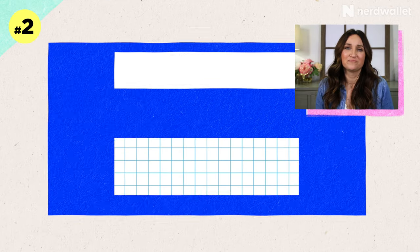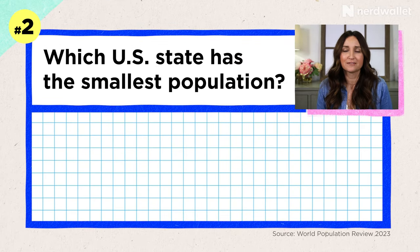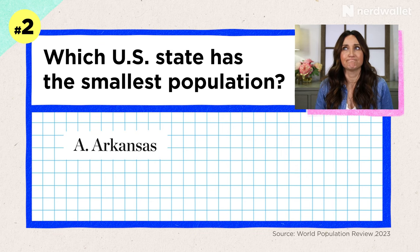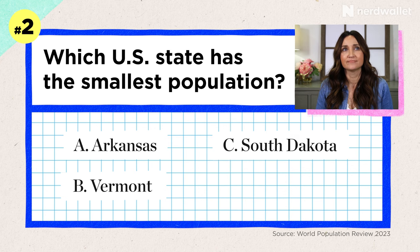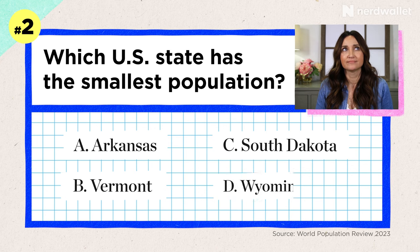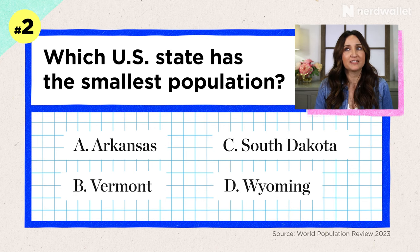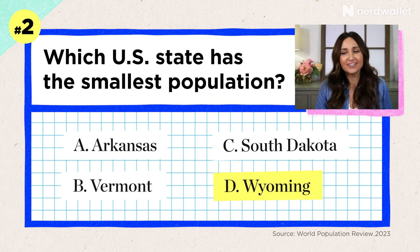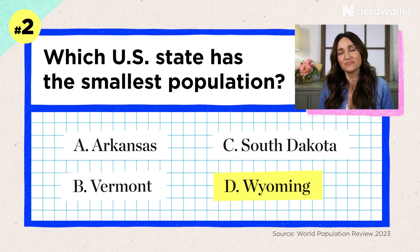Question number two is a multiple choice. Which U.S. state has the smallest population? Is it A, Arkansas, B, Vermont, C, South Dakota, or D, Wyoming? I'm going to go with C, South Dakota. Good guess — it's actually Wyoming. Really? That surprises me, actually. That would have been between those two.